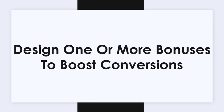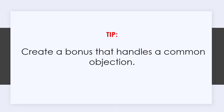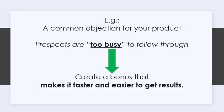Next, design one or more bonuses to boost conversions. As always, the bonus should enhance the use or enjoyment of the main offer. Take note: create a bonus that handles a common objection. For example, if a common objection for your product is that prospects are too busy to follow through, then create a bonus that makes it faster and easier to get results.